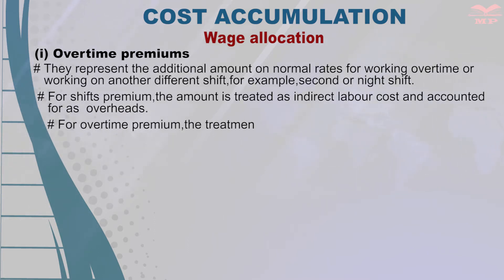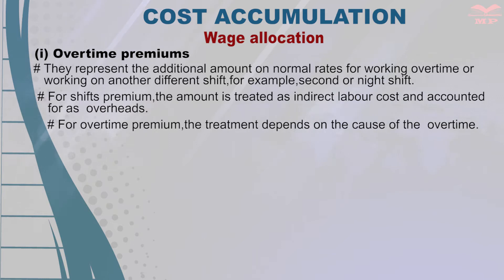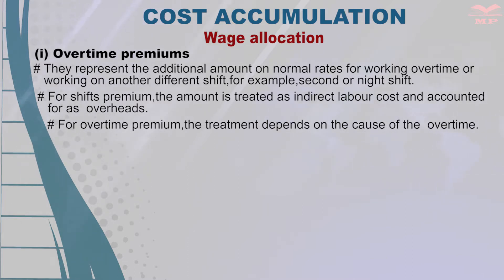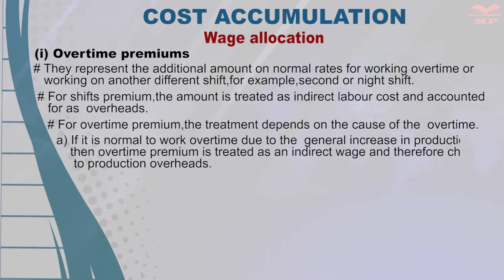For overtime premiums, the treatment depends on the cause of the overtime. If it is normal for the company to work overtime due to a general increase in production, then the overtime premium is treated as an indirect wage and therefore charged to production overheads. This is to ensure that units produced during normal time and overtime carry the same unit labor cost.